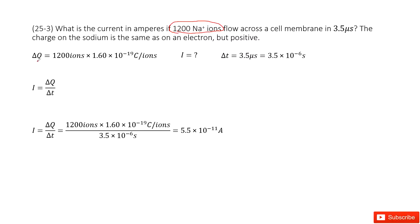And we can write it there. This is 1200 ions. As we know the charge per ion is 1.60 times 10 to the power negative 19 coulombs. So in this way we can convert the unit to coulombs.